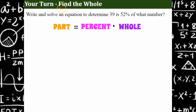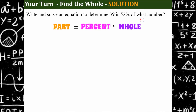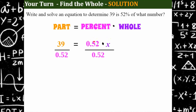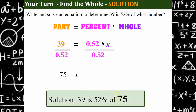Here's another one — the whole is missing. The 'what number' is our whole. Write the equation and solve. Our solution: the part is 39, equal to our percent written as a decimal (0.52), and the unknown whole is x. To solve for x, undo multiplying by 0.52 by dividing both sides by 0.52. 39 ÷ 0.52 = 75. So our solution is that 39 is 52 percent of 75.